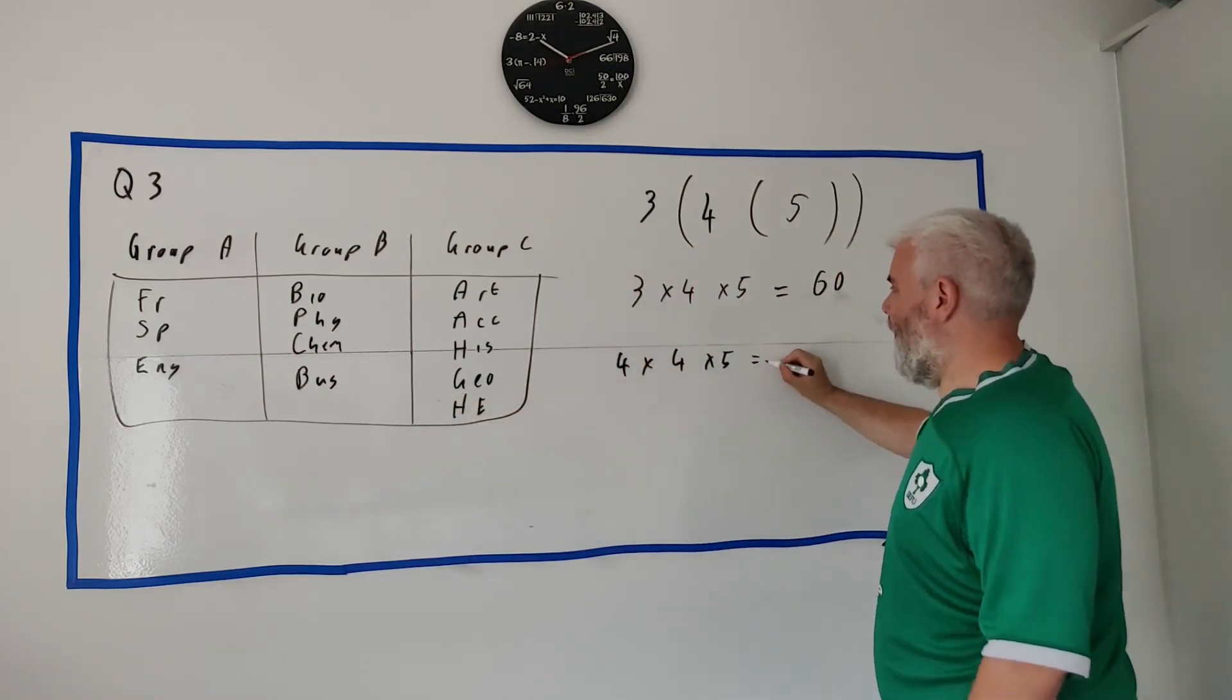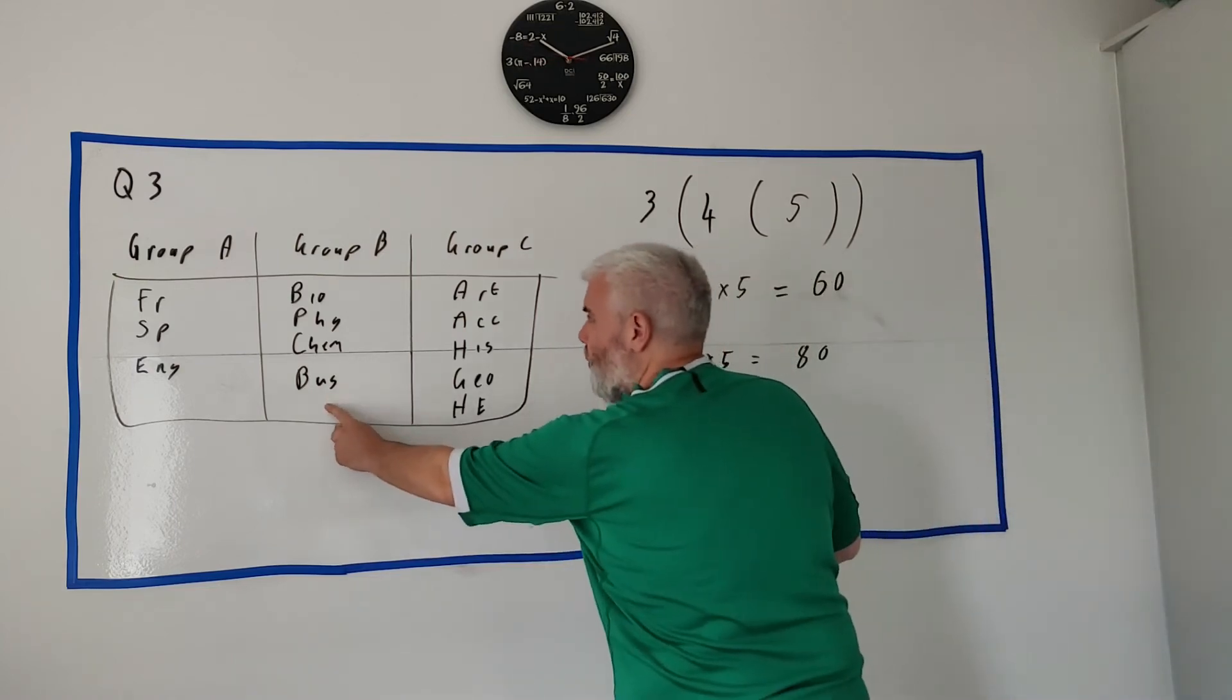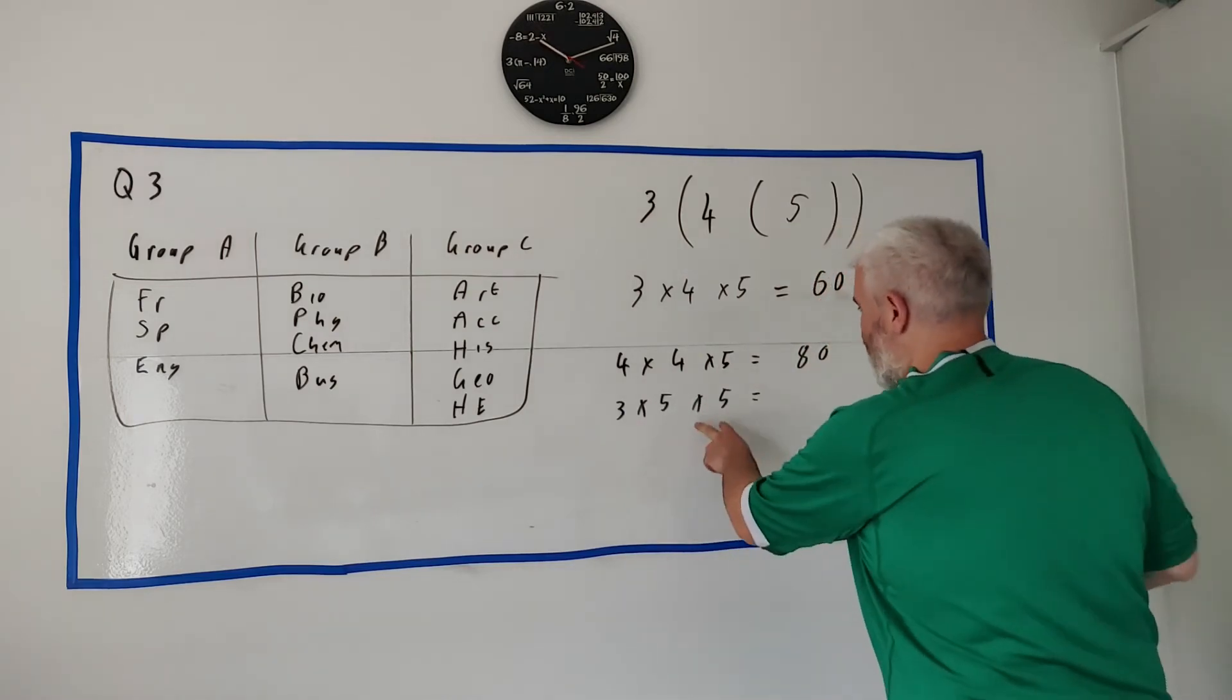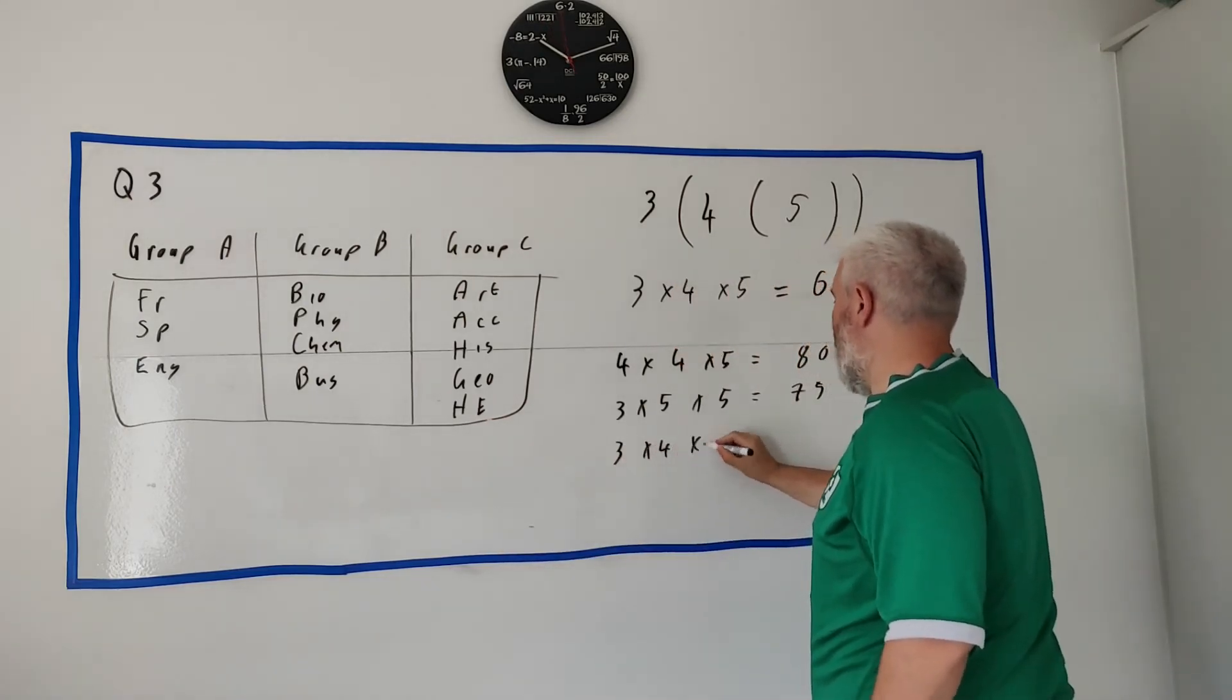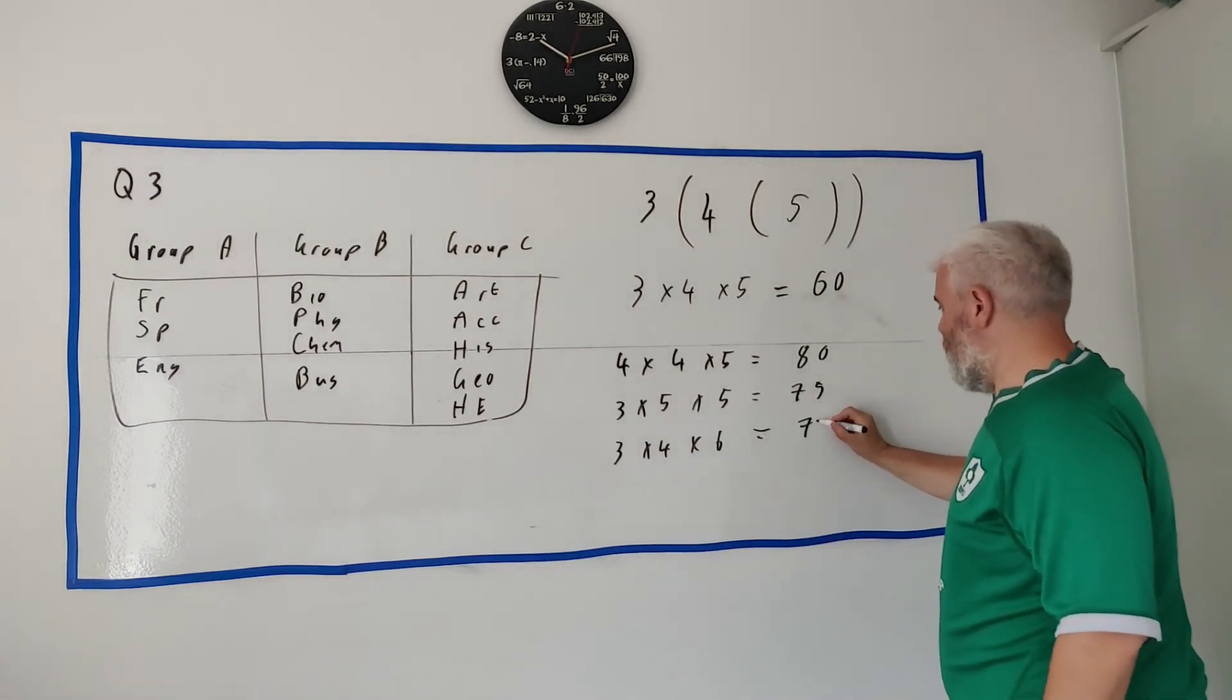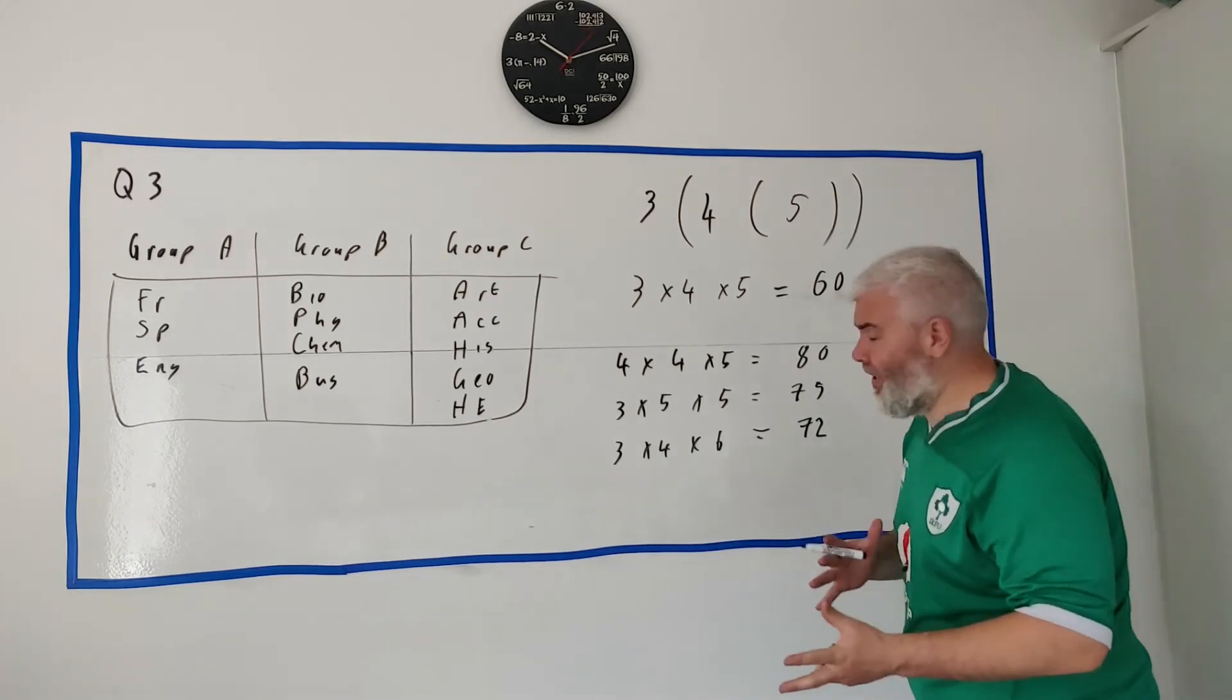Let's put four in the first one - there'd be four now, and there'd be five, that would equal eighty. Let's put the extra number in this one, so there's three times five times five, that's 75. Put the extra number here - there's three times four times six - what's that, 12 times six - 72.